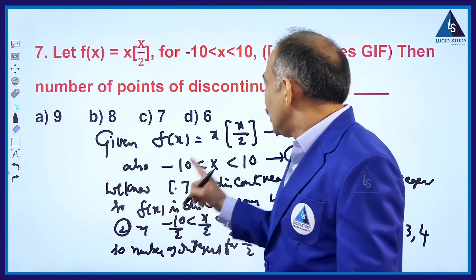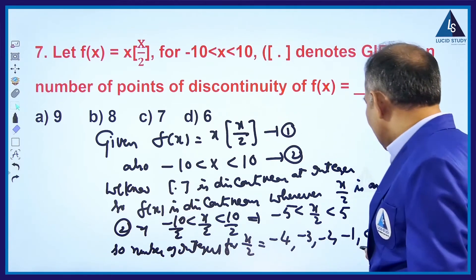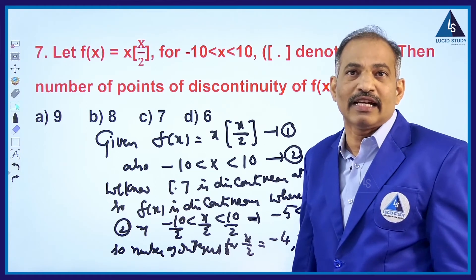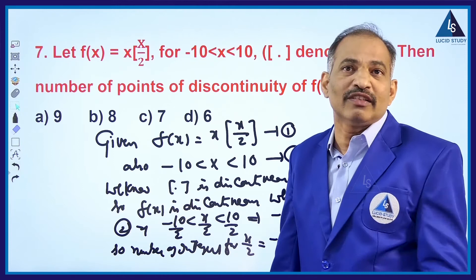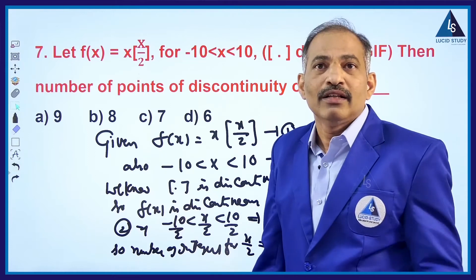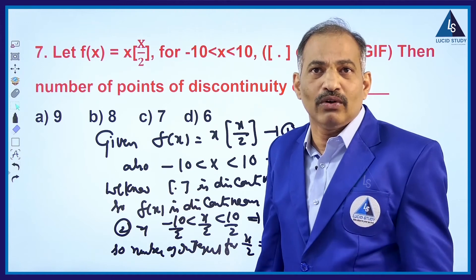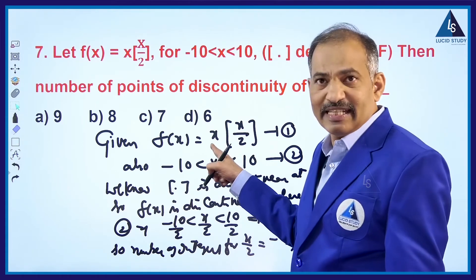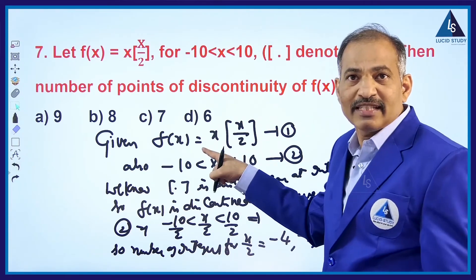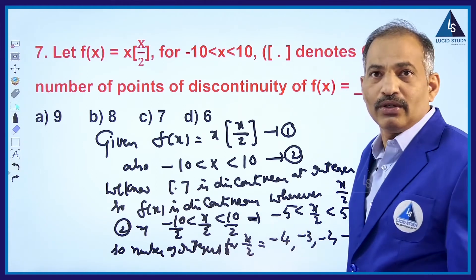In the given data, you are multiplying [x/2] with x also. But in the integers, 0 is there. So you have to check whether the function is continuous or discontinuous at x = 0. If it is discontinuous at 0, then the answer is 9; if it is continuous at 0, then the answer is going to become 8. If x were not there, the answer would directly be 9. But since you are multiplying [x/2] with x, it is compulsory to discuss the continuity or discontinuity of the function at x = 0.